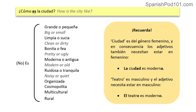More adjectives: moderna, antigua, ruidosa, tranquila, organizada, cosmopolita, multicultural, rural. And of course, if you want to say that the city is not something, you're going to say no es. You can say, for example, Barcelona es grande or Barcelona no es grande.